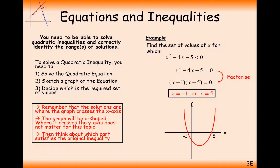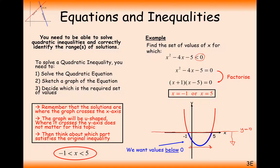Those roots help us sketch the graph, which will have intersection points at minus 1 and 5. Now the important bit: we need to decide which is the required set of values. We want the graph to be less than 0 — that is, below the y equals 0 line. So we want the blue section in between minus 1 and 5. Our answer is minus 1 is less than x is less than 5.